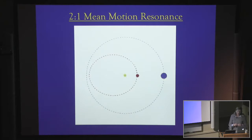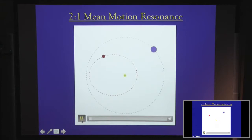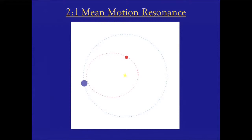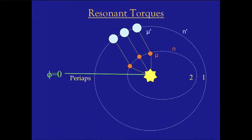Let me first tell you about what a mean motion resonance is. This is a simple picture of a 2:1 mean motion resonance. Basically, you have two planets, and the inner planet goes around its star twice in the time that the outer body goes around once, and they keep meeting again at the same position in the orbit. How do those resonances work? Why is there something special about such configurations?